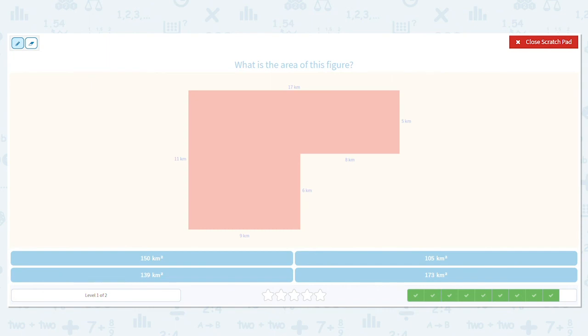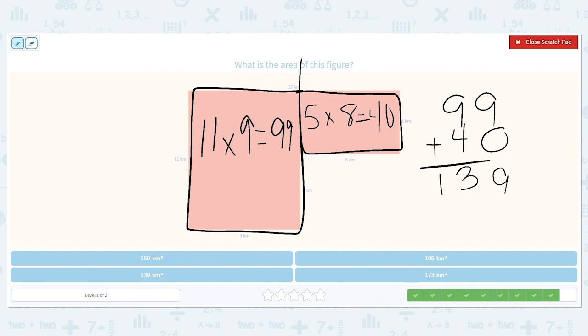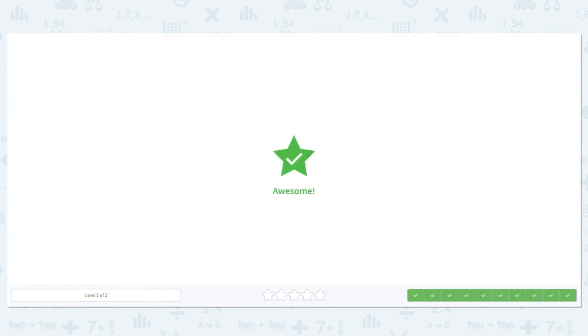I'm going to split it this way. So my first rectangle is 11 times 9, and 11 times 9 is 99. And then my next rectangle is 5 times 8, and 5 times 8 equals 40. So I'm taking 99 plus 40, adding it up, and I get 139 kilometers squared. Great work.